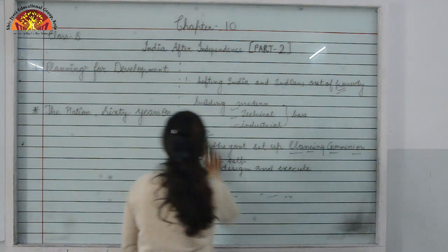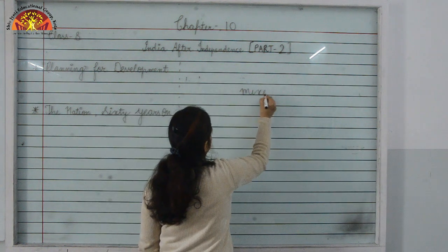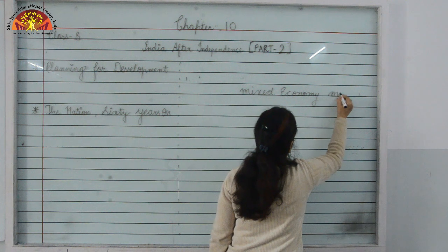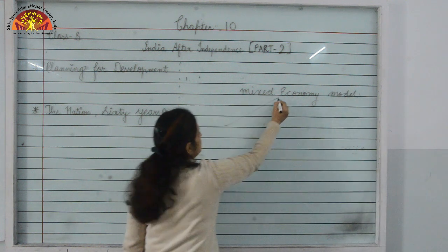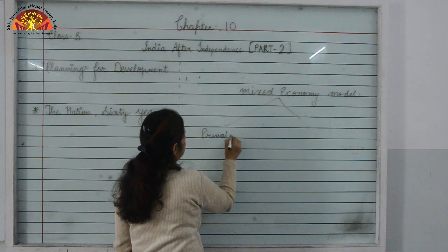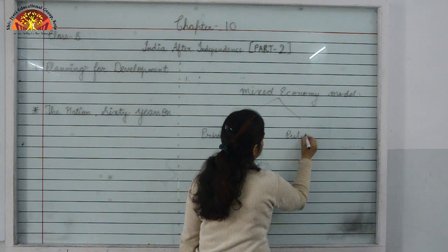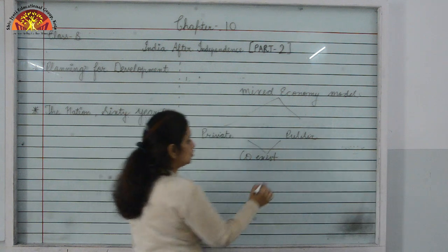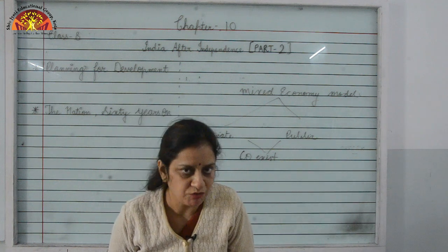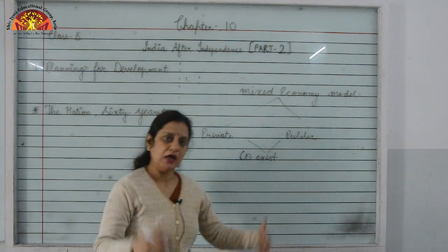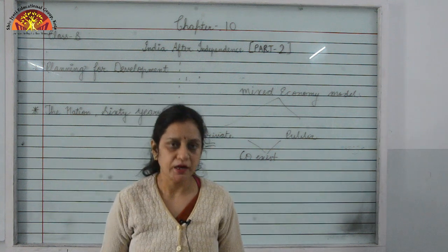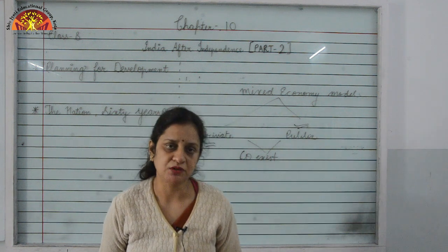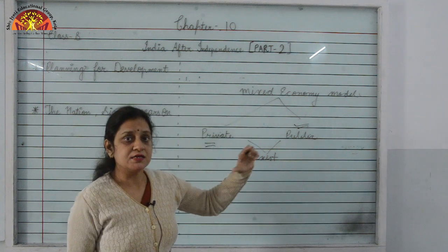Under the mixed economy model, both the private and public sectors would co-exist. The private sector is owned and run by individuals or groups of individuals, while the public sector is owned and run by the government or state government.